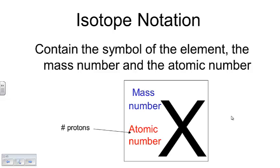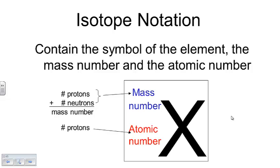The atomic number is always going to tell you the number of protons, and the mass number tells you the total number of protons and neutrons. In isotope notation, it's never a decimal number — it's always a whole number because we're talking about a particular form of a particular element. In the periodic table, by contrast, the mass number will be an average and will usually have a decimal with many numbers after it.